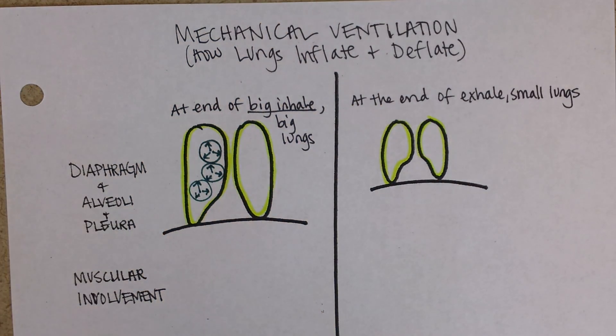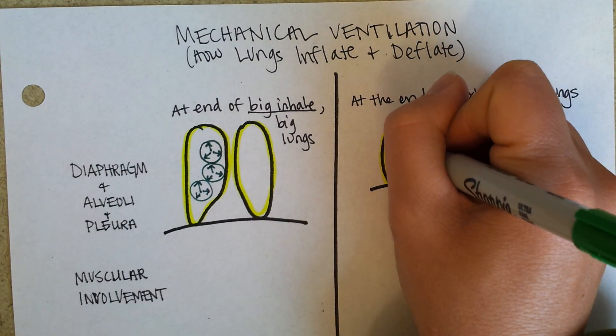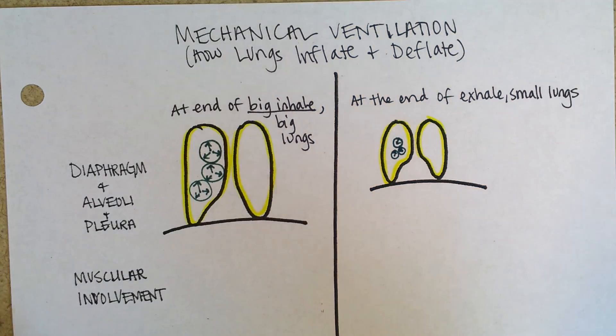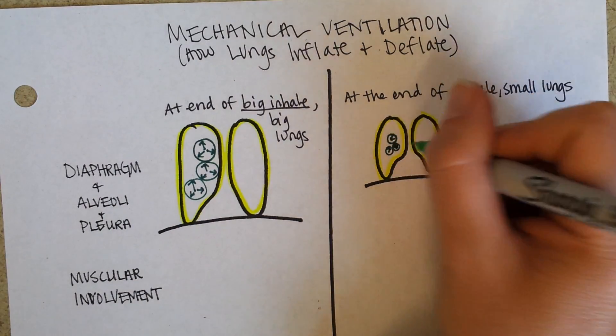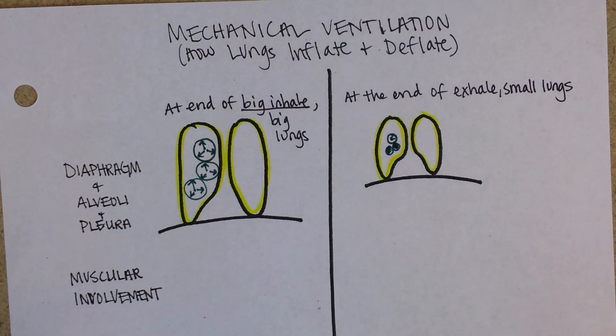And then at the end of a big exhale, the alveoli have shrunk down. Put the arrows the wrong way, didn't I? So what makes this happen? What makes the lungs get big? What makes the lungs get small?